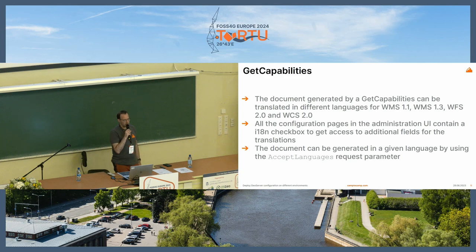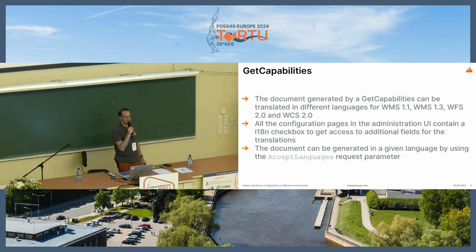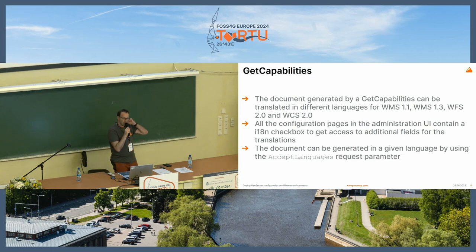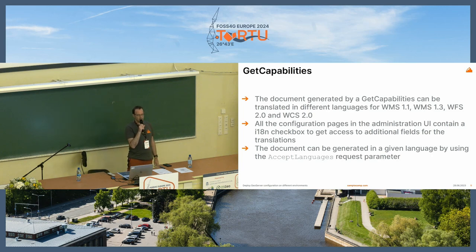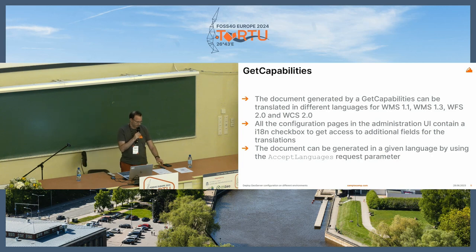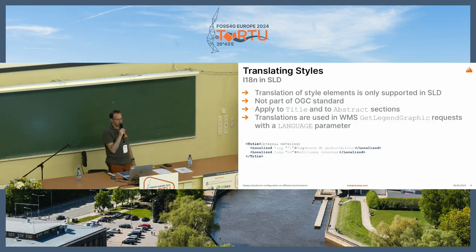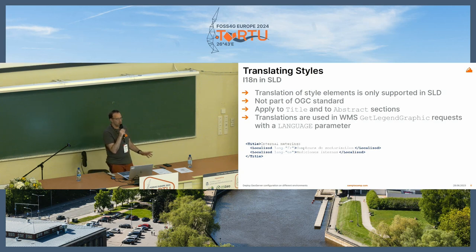For content translation, the document generated by the GetCapabilities request can be translated for many OGC protocols. You can do it on all the configuration pages of the administration UI using an internationalization checkbox, and the document can be generated when you provide an Accept-Language request parameter. You can also do some translation in styles, but only in SLD — GeoCSS or Mapbox style language is not supported.